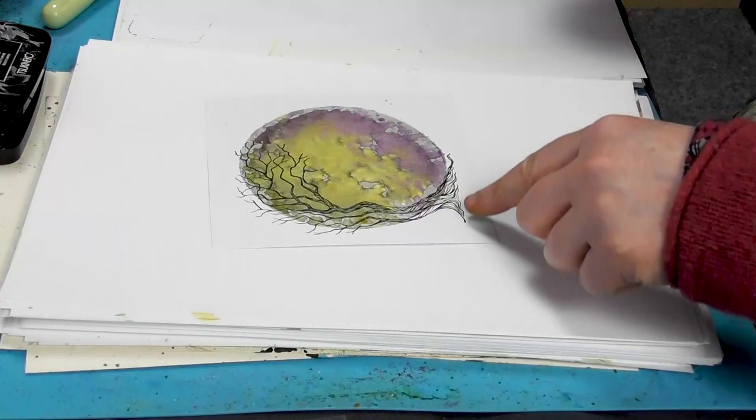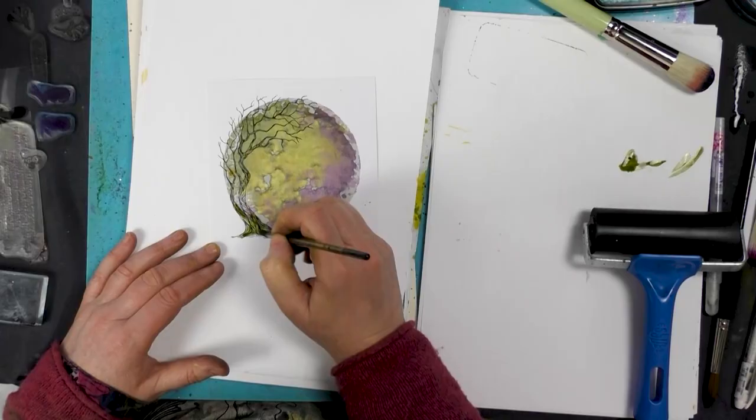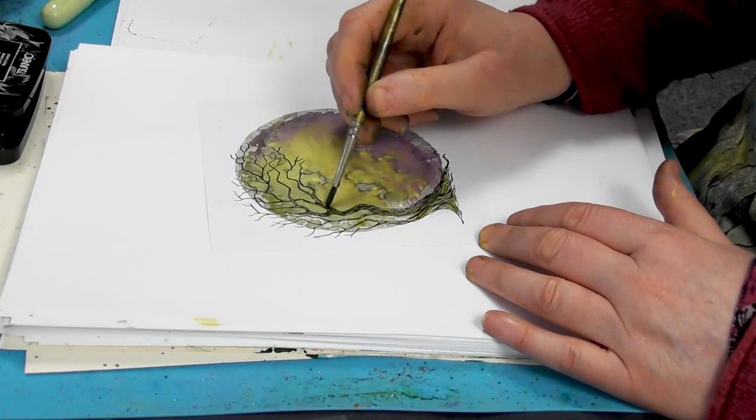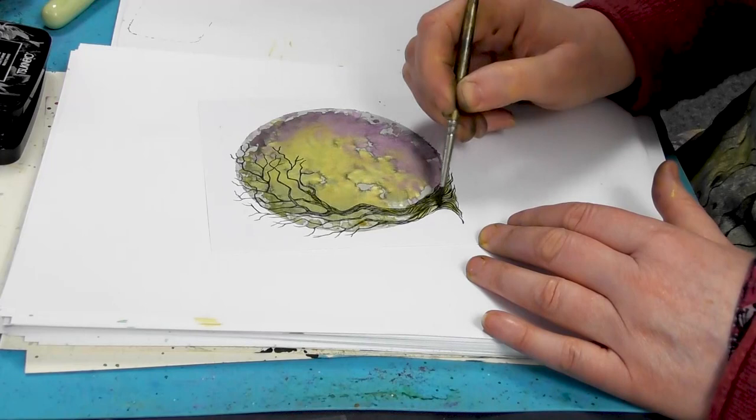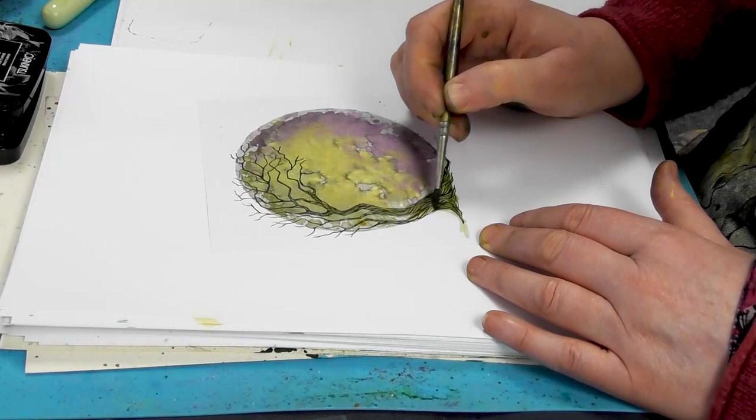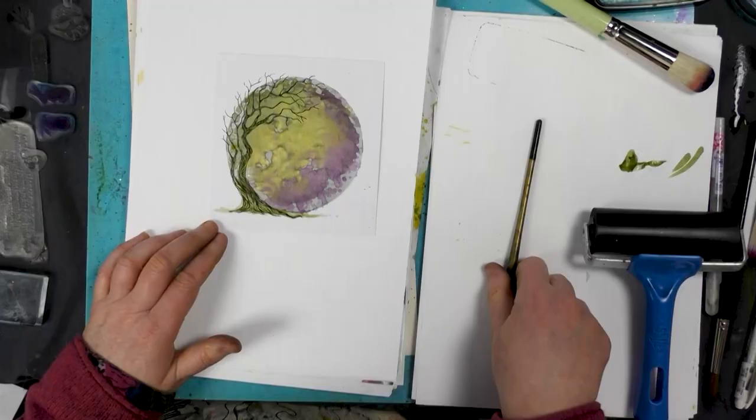I'm going back to the olive green and just painting the trunk of the tree. Because we've already stamped in VersaFine Clair, which is an oil-based ink, it means we can paint over the top and it won't budge. Let's just dry that off a little.